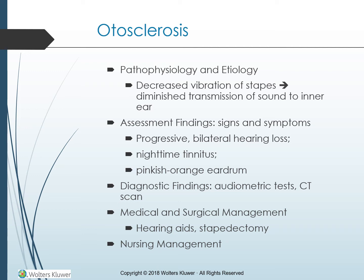Assessment findings: A progressive bilateral loss of hearing is the most characteristic symptom. The client notices the hearing loss when it begins to interfere with the ability to follow conversation, with particular difficulty hearing soft, low tones. Tinnitus appears as hearing loss progresses, especially noticeable at night. The tympanic membrane appears pinkish-orange from structural changes in the middle ear. On the Rinne test, sound is heard best when the tuning fork is applied behind the ear. The Weber test reveals lateralization to the more affected ear. Audiometric tests reveal the type and severity of hearing loss, and a CT scan demonstrates the location and extent of excessive bone growth. Although otosclerosis has no cure, a hearing aid helps.